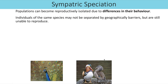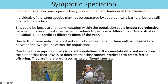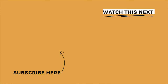In sympatric speciation, populations are in the same area but are reproductively isolated due to differences in behaviour. A random mutation might impact reproductive behaviour — for example leading to different courtship rituals, or becoming fertile at different times of the year. In plants, different flowering times can cause the same effect. With no gene flow between the groups, the reproductively isolated populations accumulate different mutations until their DNA is so different they cannot interbreed to make fertile offspring, and are therefore classed as two different species.